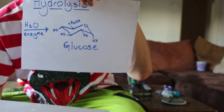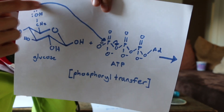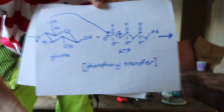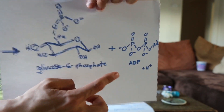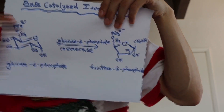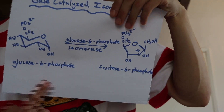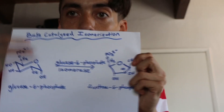Hydrolyze these to glucose and fructose, invest some energy so you can get out the most. Glucose attacks the gamma-phosphorus of ATP, phosphoryl transfer leads behind ADP. Then a base catalyzed reaction turns glucose-6-phosphate to past tense.